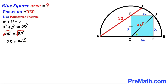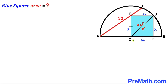We can see that OD is both the diagonal of the square and the radius of the semicircle. So the radius of this semicircle is a√2. Likewise, OB is a radius of this semicircle, so OB = a√2, and AO is also a radius of this same semicircle, so AO = a√2 as well.